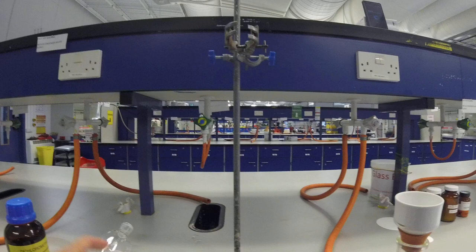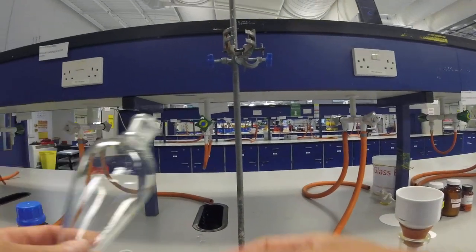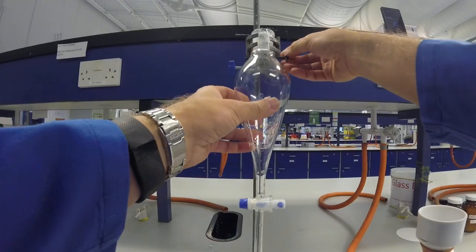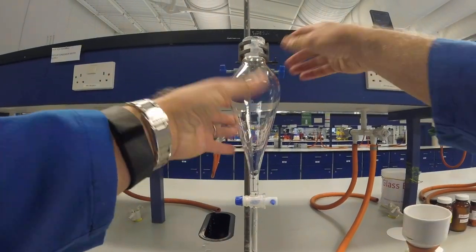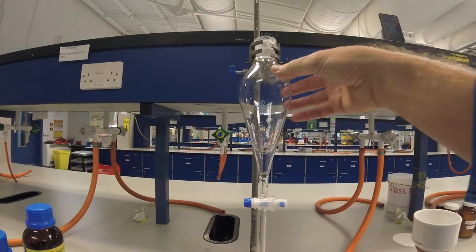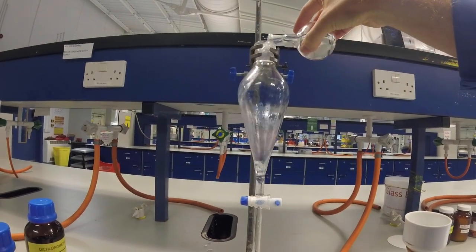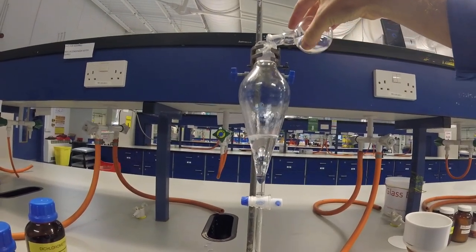The first thing we do as part of the workup procedure is a liquid-liquid separation using a separating funnel. So you're going to get yourself a clamp and stand separating funnel and then you pour your reaction mixture into the separating funnel.